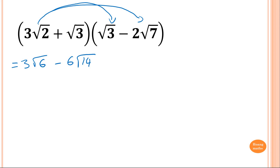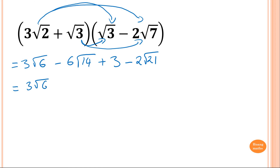Next one: root 3 times root 3 gives 3. Root 3 times that gives minus 2 square root of 21. I can't simplify any further. So writing it all out: minus 6 square root of 14, minus 2 square root of 21, and then plus 3.